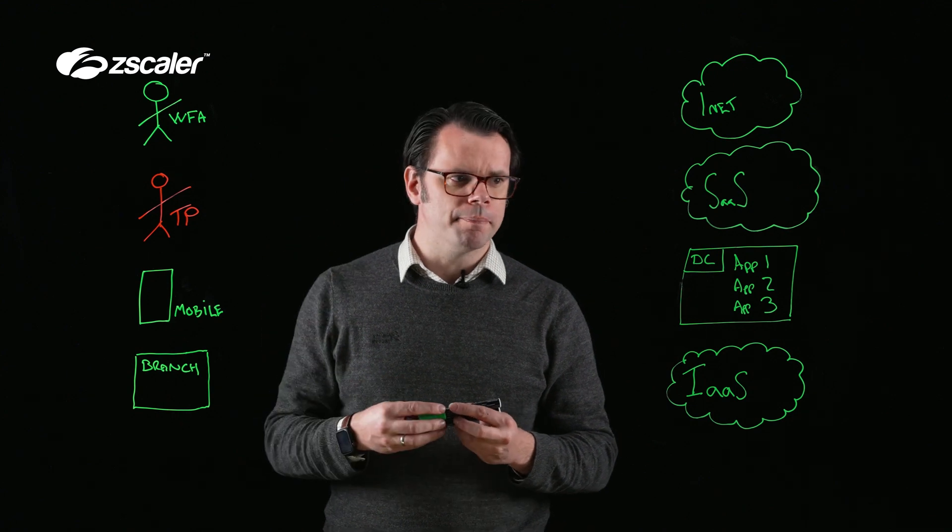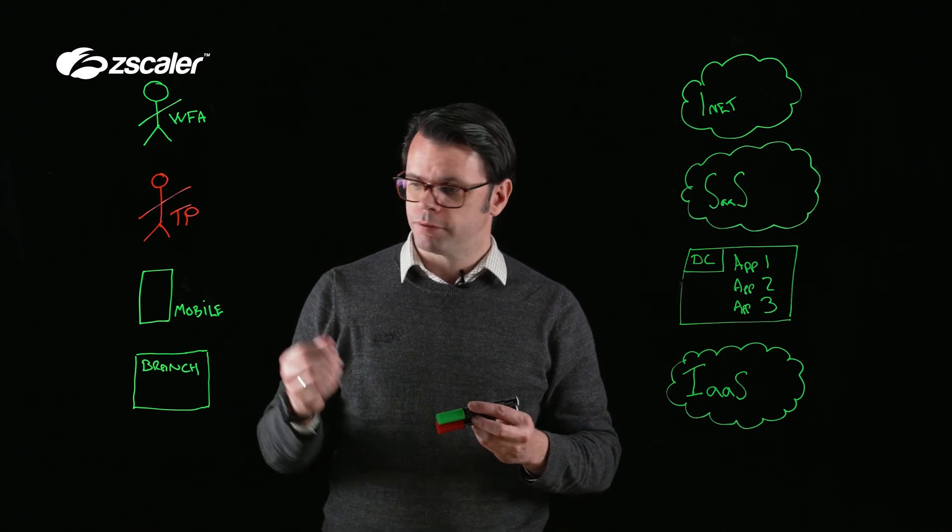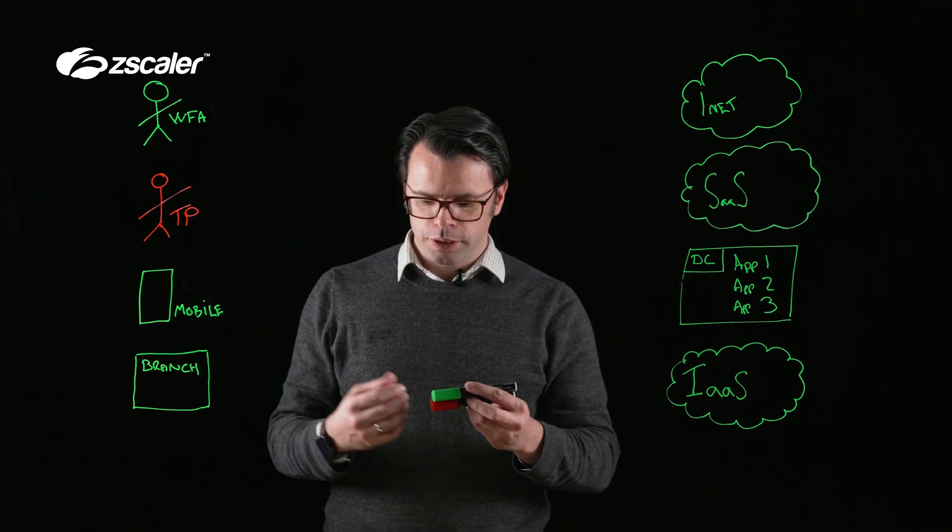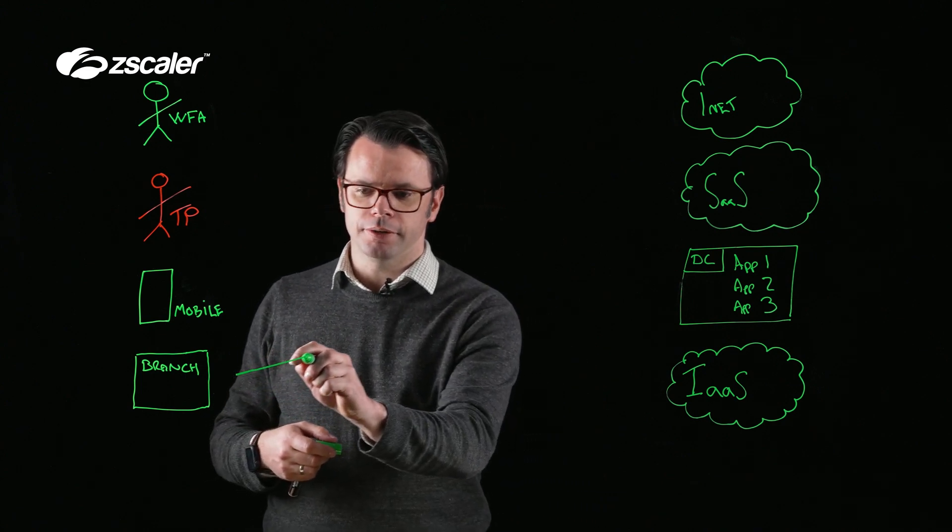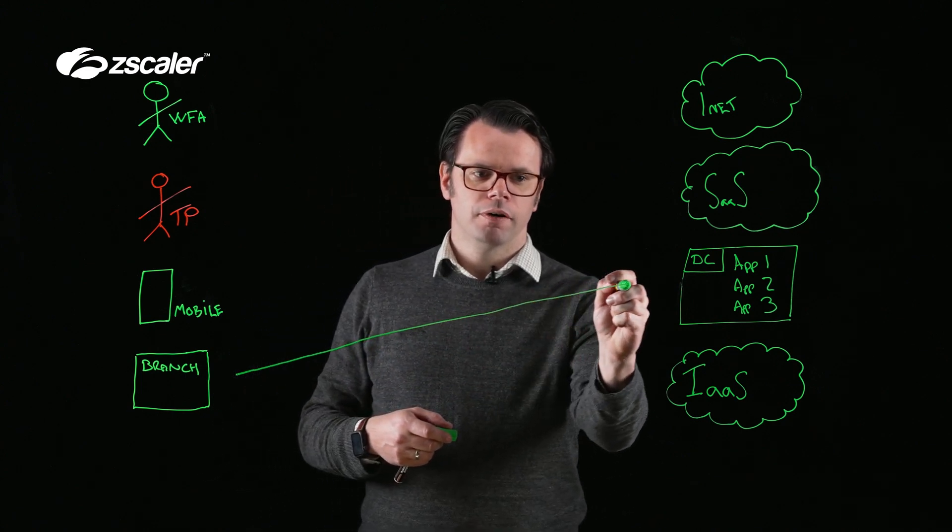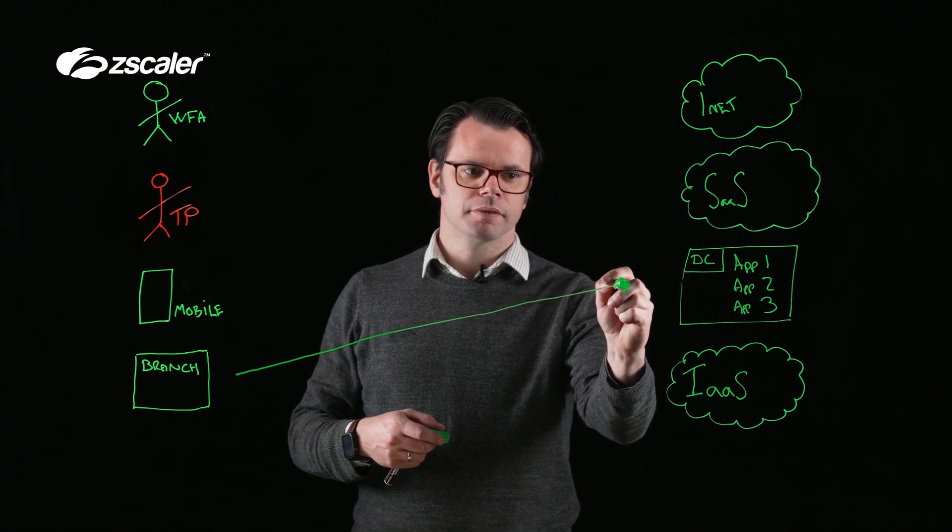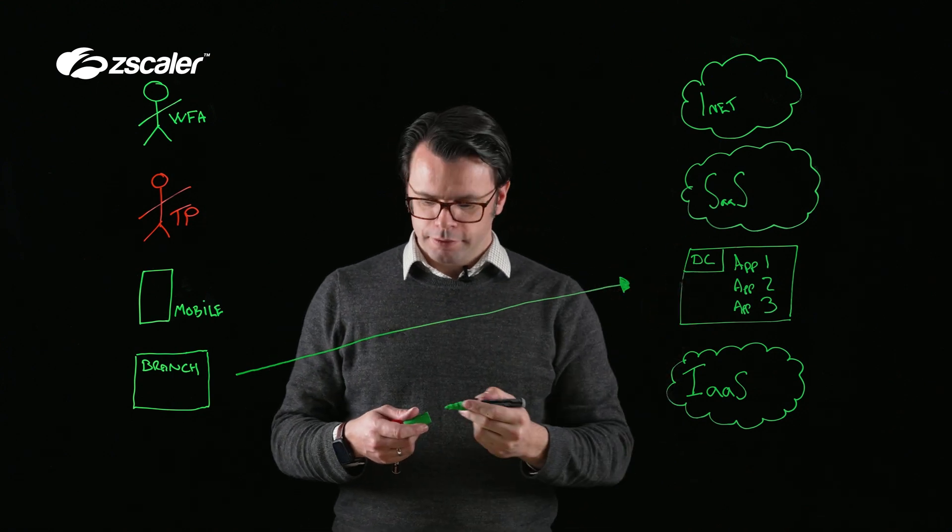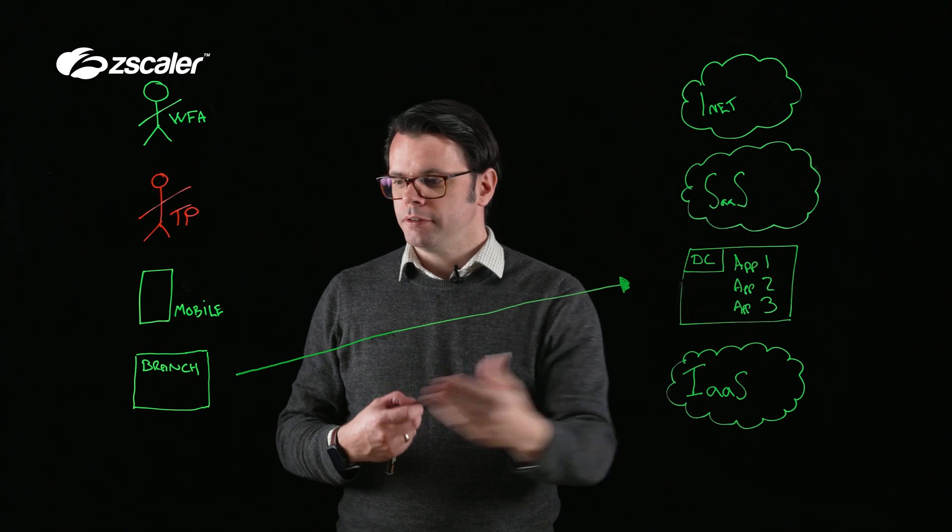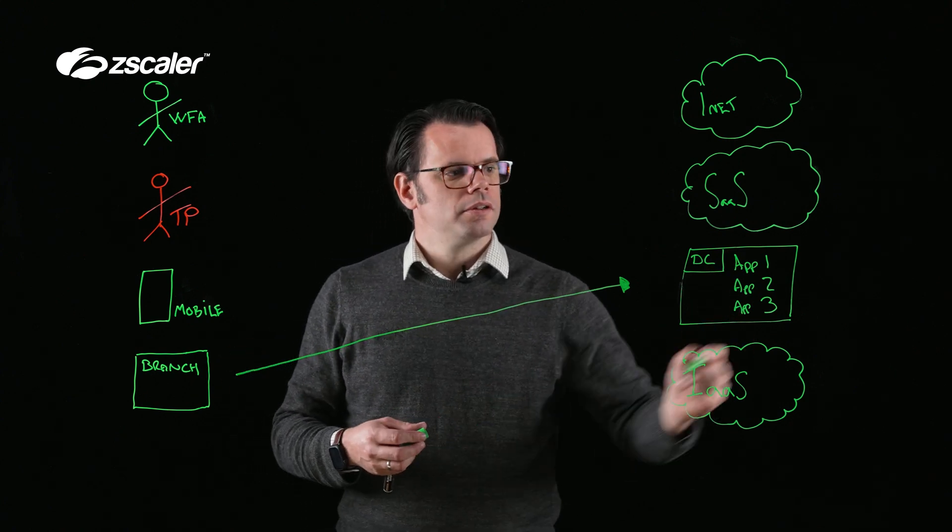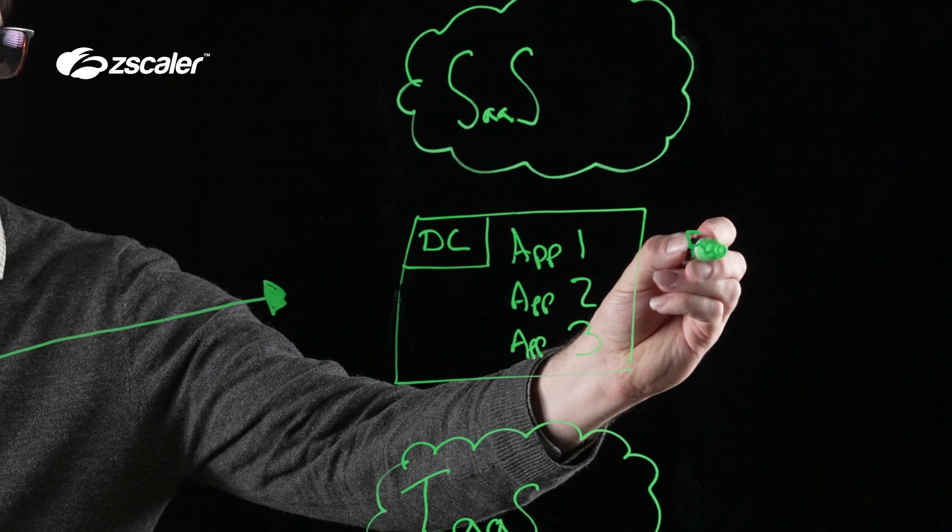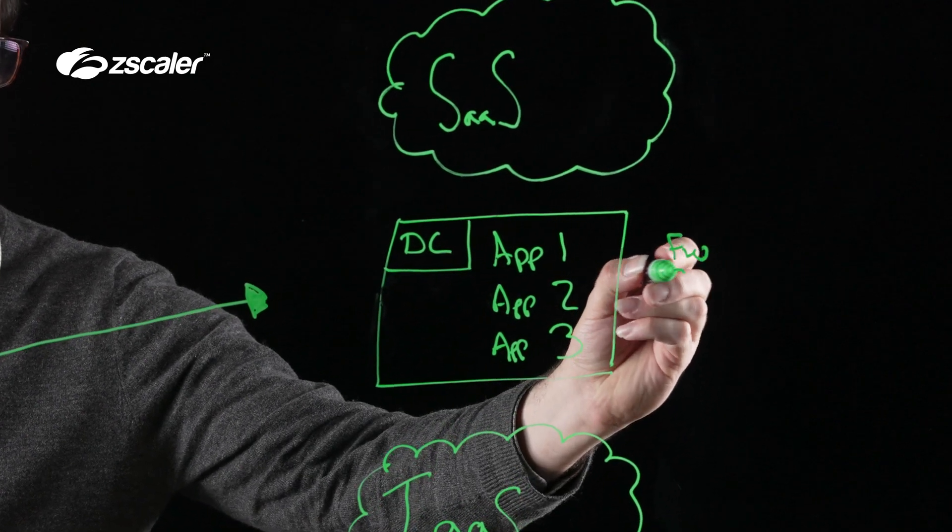So when we think about connectivity, traditionally from a branch office, usually we would have something like an SD-WAN or an MPLS route from the branch through to a data center. Within that data center, we then have the applications that we want to access.